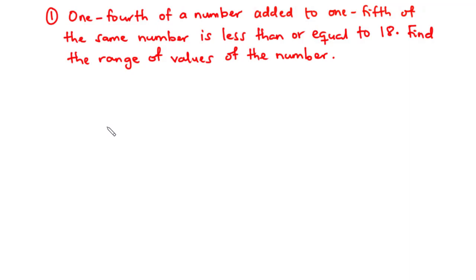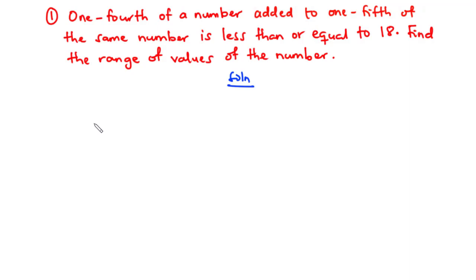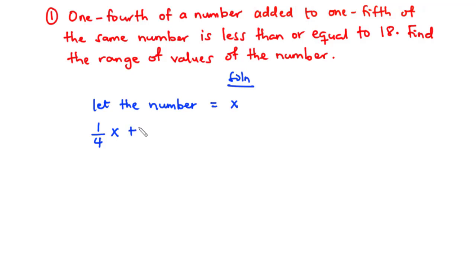We have one-fourth of a number added to one-fifth of the same number, and the result is less than or equal to 18. We are asked to find the range of values of the number. Since we don't know the number, we represent it with a variable. Let the number be x. So one-fourth of x added to one-fifth of x is less than or equal to 18. This is our linear inequality and we can now solve for x.